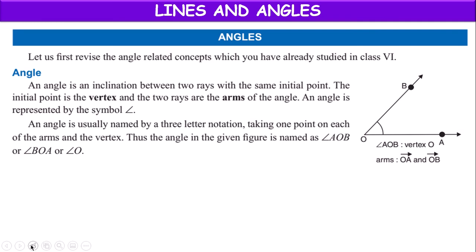An angle is an inclination between two rays. This is one ray and this is the second ray. The inclination between the two rays is called an angle. But the two rays should have one common point. This ray is OA ray and this ray is OB ray. O is the common point, and the inclination at point O is called an angle.